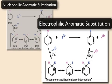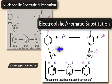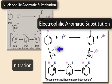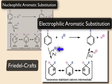In our studies of electrophilic aromatic substitution, the benzene ring was the electron-rich substrate and acted as a nucleophile, and could react with a variety of electrophiles in halogenation, nitration, sulfonation, and Friedel-Crafts alkylation and acylation reactions.